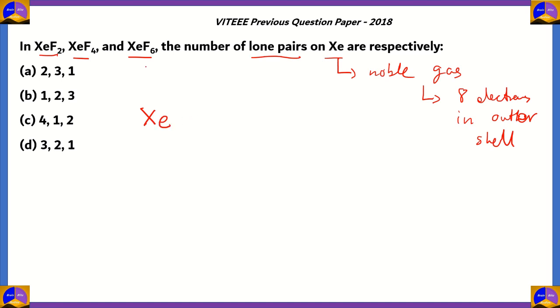You have xenon and two fluorine atoms trying to bond with it. They form this structure. Two of the electrons of xenon are used up in forming the bond pairs. You still have three lone pairs left. So here's a pair of lone electrons, here's another, here's another. You have three of those in XeF₂.